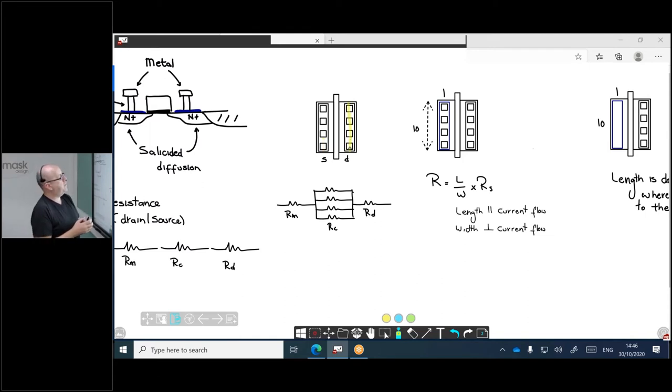What I've tried to represent in this case is a simple model of the resistance in the source. So again, we have the resistance of the metal, the resistances of each of the contacts in parallel with each other, and then the resistance of the salicide diffusion. What we're going to look at is a really simple technique of how we can optimize the resistance of these, and we're going to be focusing primarily on metal resistance.